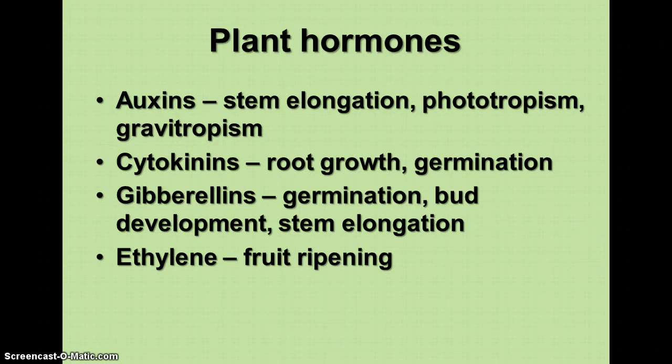There are several kinds of plant hormones. Auxins are hormones involved in elongation of stems and are important in phototropism and gravitropism. Cytokinins are hormones involved in root growth, seed germination, and vegetative reproduction by cuttings. Gibberellins are also involved in germination but are largely responsible for making plants get bigger — producing bigger flowers and bigger fruits — and are active in bud development and stem elongation.